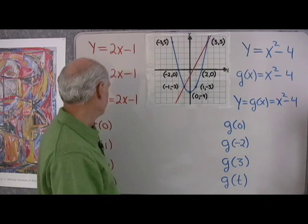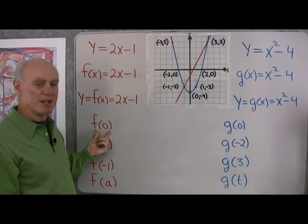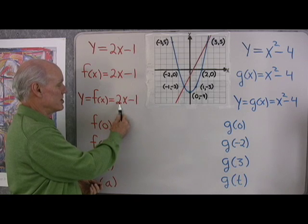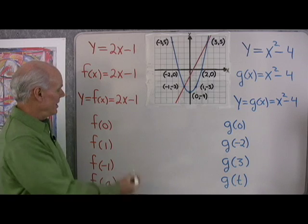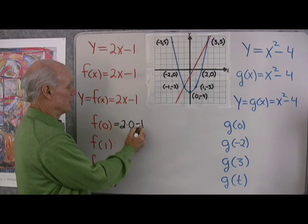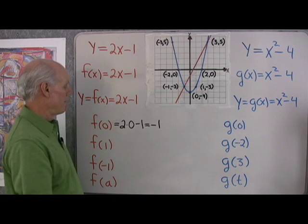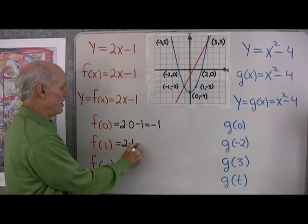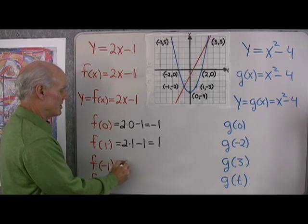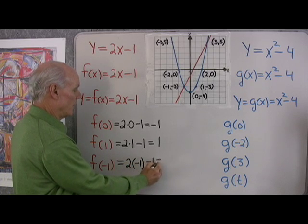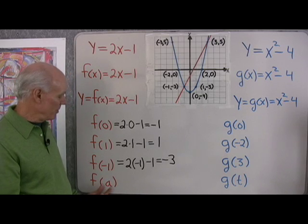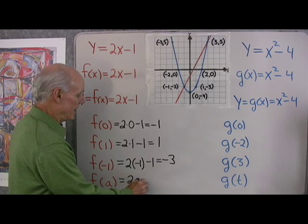Let's see if we can use this function notation. If f of x is 2x minus 1, what's f of 0? The formula tells us exactly what to do — whatever's inside the parentheses, I multiply by 2 and subtract 1. So f of 0 is 2 times 0 minus 1, which is negative 1. f of 1 is 2 times 1 minus 1, that's 1. f of negative 1 is negative 2 subtract 1, which is negative 3. And f of a is 2 times a minus 1.